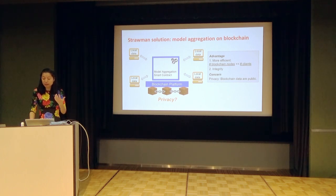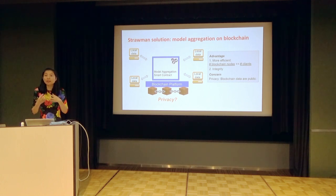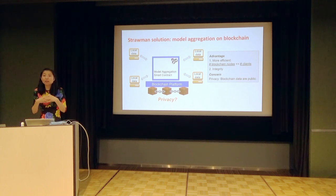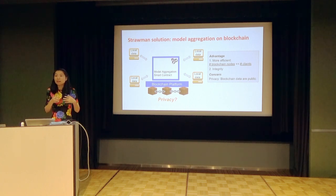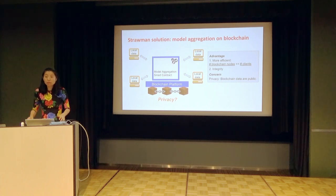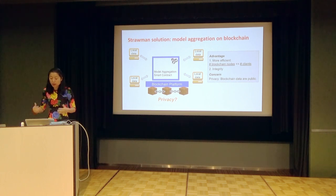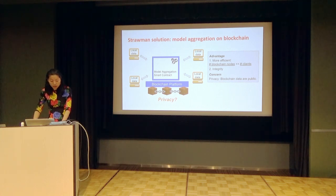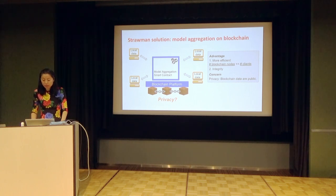The challenge here is that this approach can be very efficient and provides strong integrity guarantees even in a decentralized setting where we don't need to rely on trust of a centralized server. However, the challenge is that there can be privacy concerns, because on a typical blockchain smart contract platform, the blockchain data is public. Even though in this case the clients are not sending local data to the blockchain platform, even these gradient updates to update the machine learning models can still contain sensitive information. So the question is, how can we do this in a more privacy-preserving way?